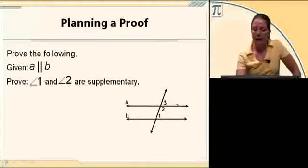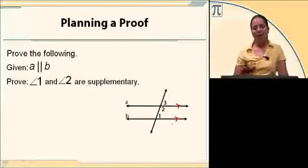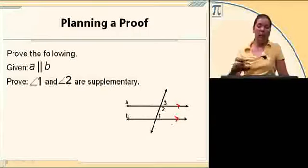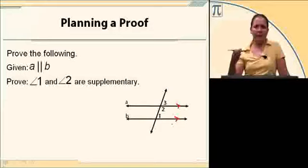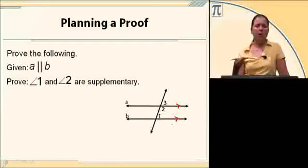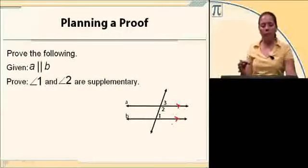We know that A and B are parallel. If A and B are parallel, then we can say that 1 and 3 are congruent because they're corresponding angles. And I also know that 2 and 3 are supplementary because they form a linear pair. So if 1 and 3 are congruent, and 2 and 3 are supplementary, then 1 and 2 must also be supplementary. Let's see if we can write that out and make a little bit more sense.